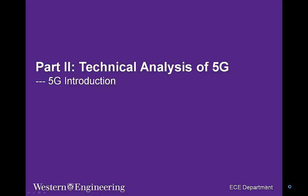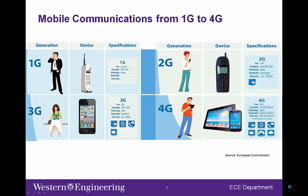Let's move on to the second section of the presentation: technical analysis of 5G. We'll start with an overview of the evolution of mobile communication technologies. During the last around 40 years, we have witnessed explosive growth of the wireless industry and a dramatic evolution from the first generation to the fourth generation. We can see some representative user equipment for 1G to 4G on this slide, including the analog Motorola Dynatac phone for the first generation.